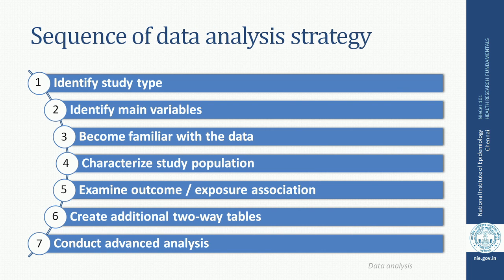The data analysis strategy has its sequence, and I am going to talk about these 7 steps. The first step is identifying the study type, which is essential before you venture into data analysis. The second is identifying main variables. The third, becoming familiar with the data. Fourth, characterize the study population. Fifth, examining the association between exposure and outcome based on the study type. Sixth, creating additional tables, and finally, to conduct an advanced analysis.